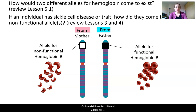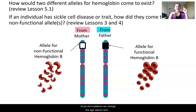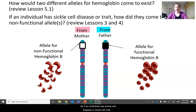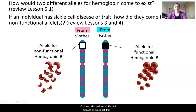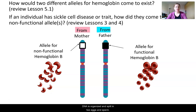So how did these two different alleles for hemoglobin come to exist? A quick review of lesson 5.1 reminds us that mutations can change the A's, G's, C's, and T's of your DNA, leading to brand new alleles in different genes. If an individual has sickle cell disease or sickle cell trait, they come to have these non-functional alleles from their parents — through meiosis and the making of gametes, as covered in lessons 3 and 4.